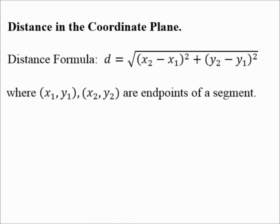When you're looking for the distance between two points in the coordinate plane, use the distance formula: d equals the square root of the quantity (X2 minus X1) squared plus (Y2 minus Y1) squared. Those values come from the two endpoints of a segment: (X1, Y1) and (X2, Y2).